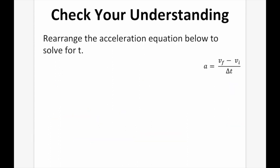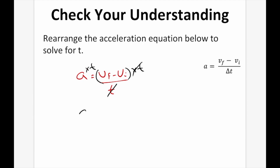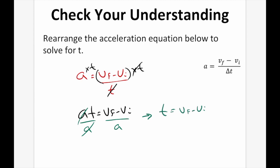Rearrange the acceleration equation to solve for t. Starting with a = (vf − vi)/t, multiply both sides by t to get at = vf − vi, then divide both sides by a to get t = (vf − vi)/a.